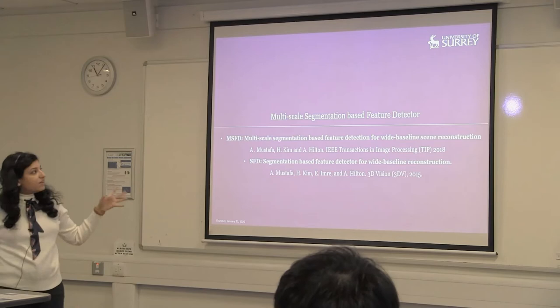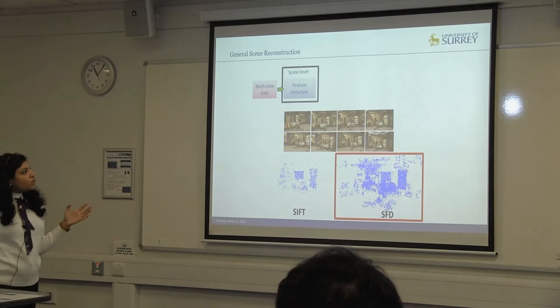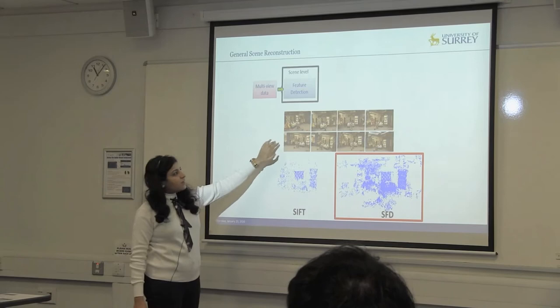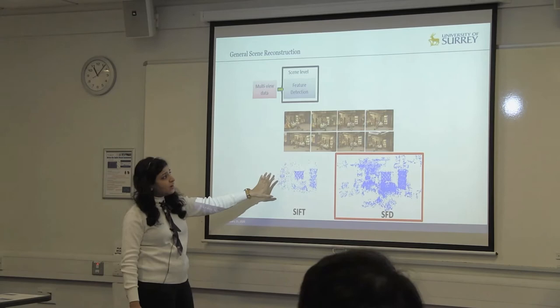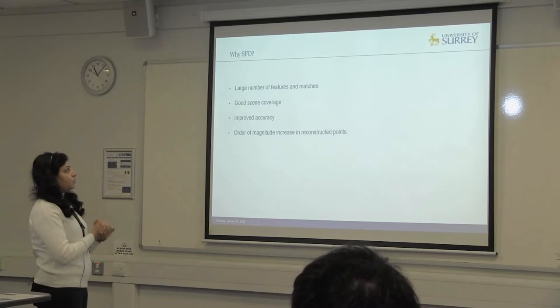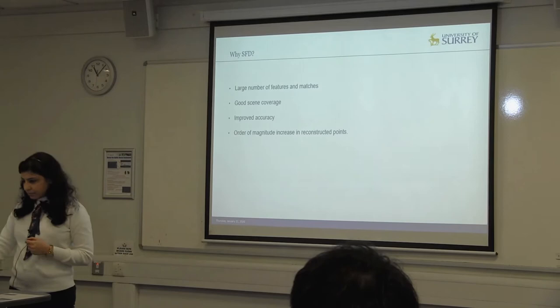I'll start with the multi-scale feature-based detector, published in CVPR 2018, with an early version in 2015. When you have multi-view data and want to reconstruct scenes, the first thing is feature detection — these features are matched across views to get sparse reconstruction. In this scene with 8 cameras, using SFD features you get a sparse reconstruction, but what you actually want is a much more dense representation. The segmentation-based feature detector, SFD, gives a large number of features and matches, good scene coverage, improved accuracy, and an order-of-magnitude increase in reconstructed points.